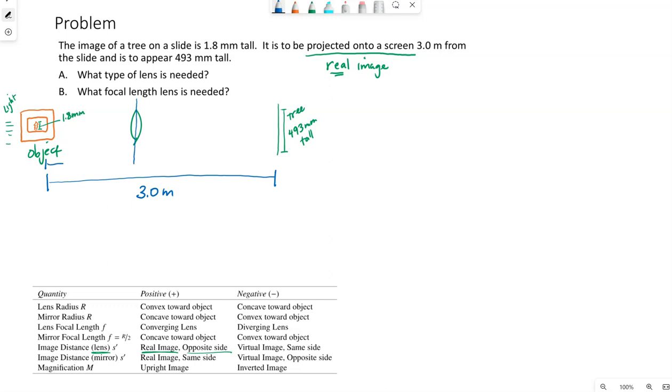The slide to the lens is S. The lens to the screen, where the image is located, is S prime. So we can say S plus S prime has to be 3 meters.